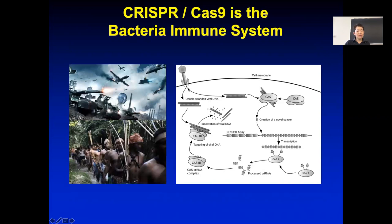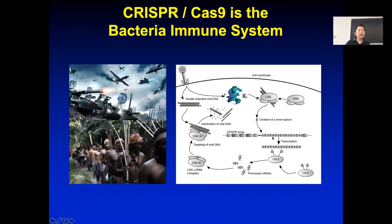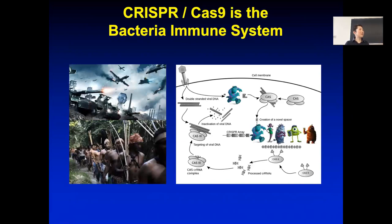The way bacteria does this is it remembers a unique piece of DNA from the virus—let's call it an alien—and keeps a copy of that in its own DNA. This DNA is inserted into what I call the police station of the bacteria's DNA system. When people were sequencing the bacterial genome, they noticed regions with lots of repeats: a little bit of unique sequence, a repeat, another unique sequence, a repeat. This turned out to be the police station keeping track of all the bad guys that had previously infected this bacterium.